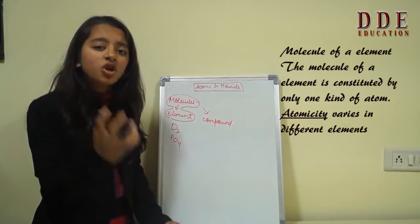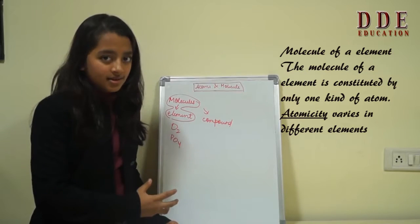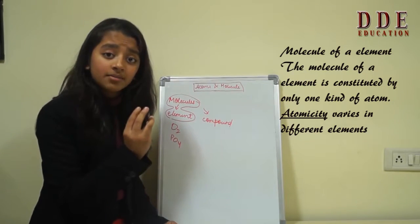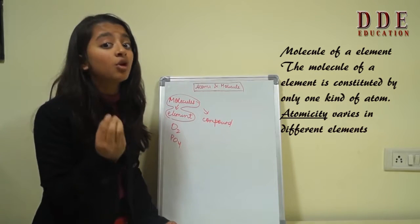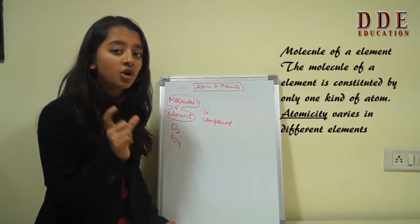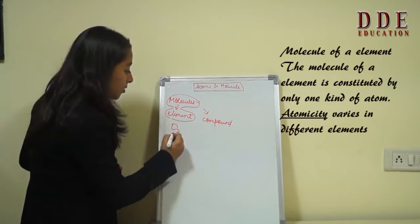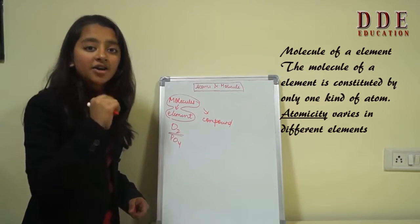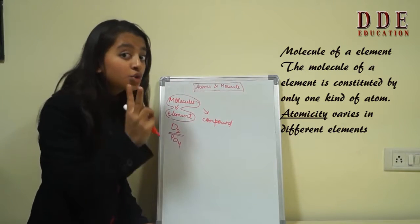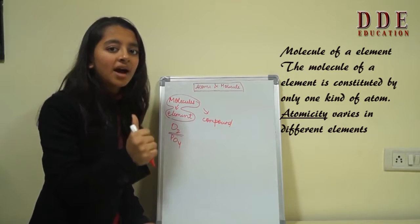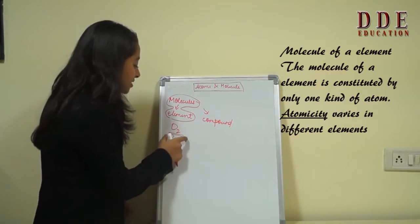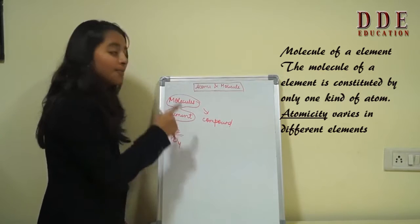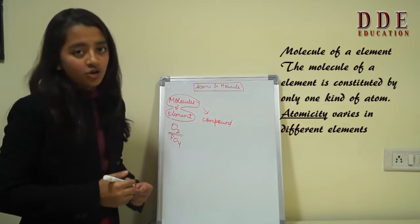But what is atomicity? The number of atoms constituting a molecule is its atomicity. For example, oxygen is diatomic. That means two atoms of oxygen combined to form a molecule. That is its atomicity is two or diatomic.